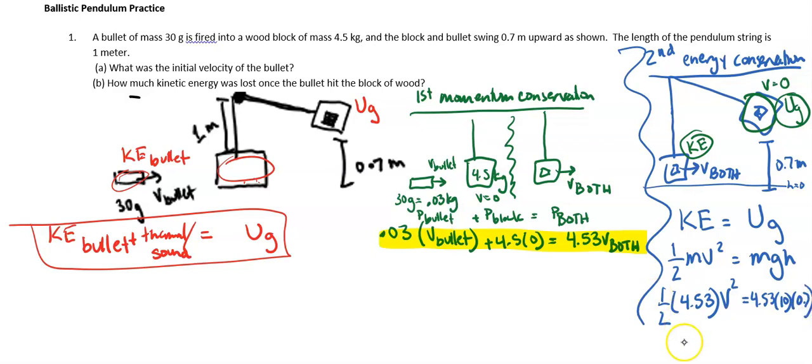I do some good old math, and I get the velocity to be 3.74 meters per second. So I want you to think about where that velocity goes. Okay, so that was the velocity of both of them.